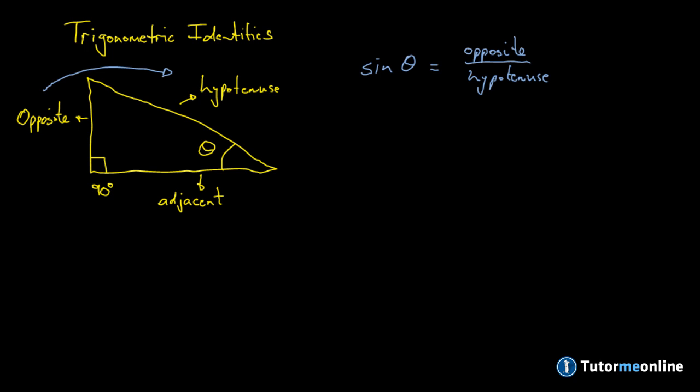Then next we'll have a look at the cosine of theta. The cosine of theta is equal to the adjacent side over the hypotenuse.